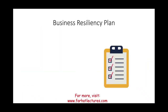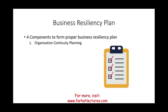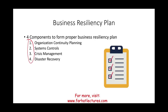Now, the business resiliency plan. To have a proper business resiliency plan, we're going to identify four components. The first is organizational continuity planning — that's part one. The second is system controls. The third is crisis management. And the fourth is disaster recovery. In this session, I'm going to focus specifically on the first component: organizational continuity planning.